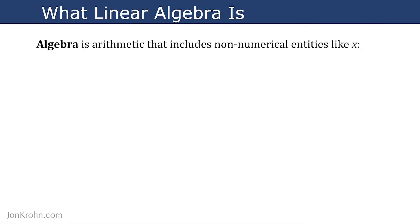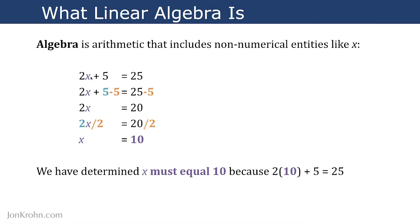So algebra is arithmetic that includes any non-numerical entities like x. So here's a simple example. If we have this equation, 2x plus 5 equals 25, we can subtract 5 from both sides of the equation, and then that will leave us with 2x is equal to 20. We can then divide by 2 on both sides, leaving us with 10 as our answer. And you can confirm for yourself that x must be equal to 10, because you can plug it into the original equation, and when x is equal to 10, 2x plus 5 comes out to 25.